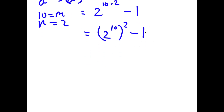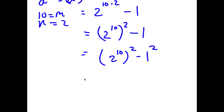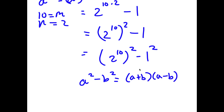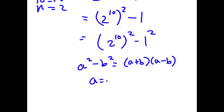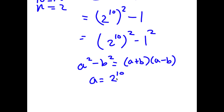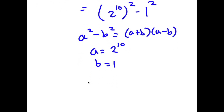Now, 1 here is the same thing as 1 to the power of 2, because 1 to the power of any number is simply just 1. So I'm going to write 1 as 1 to the power of 2. Now if I have something in the form a squared minus b squared, this equals a plus b times a minus b. In this case, a is 2 to the power of 10 and b is 1. So I can rewrite this as 2 to the power of 10 plus 1, times 2 to the power of 10 minus 1.